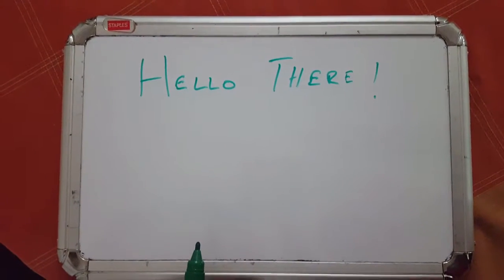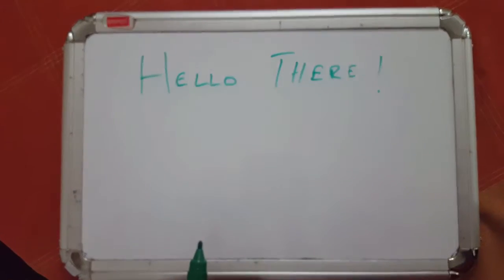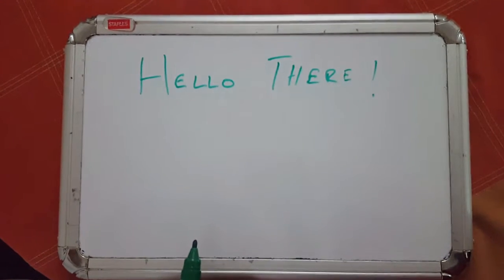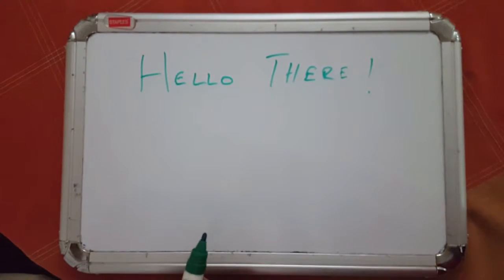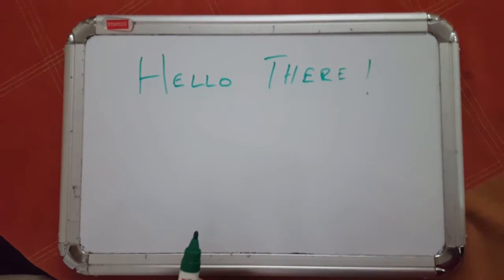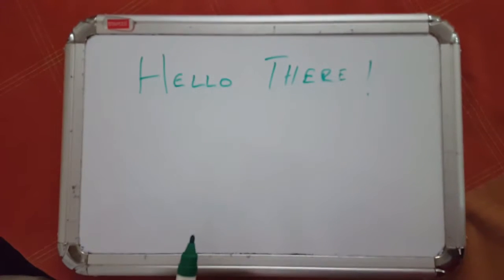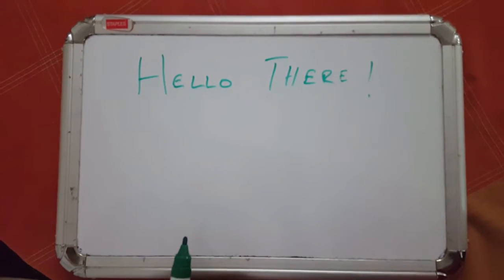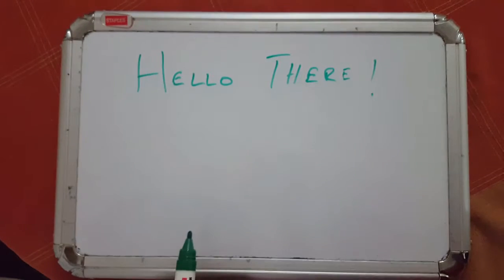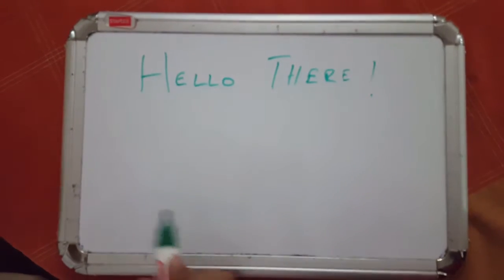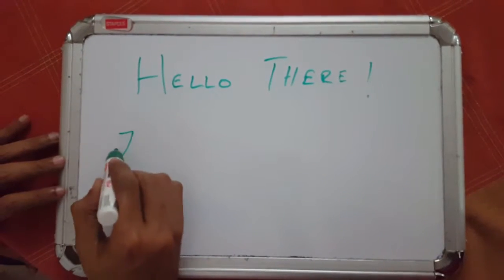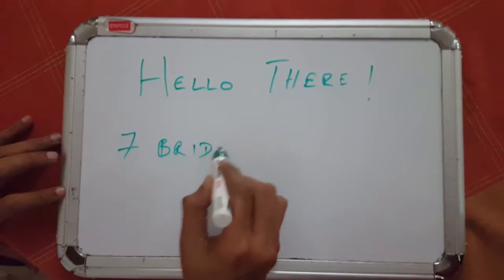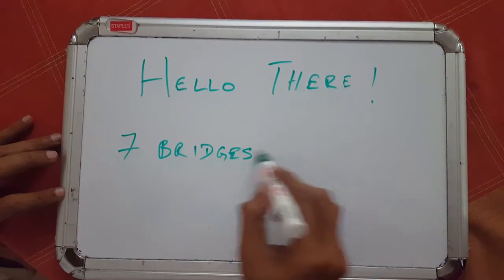My name is Swami and I'm going to talk to you on a topic in mathematics. I looked at the list of topics and I saw that Sal had covered pretty much all of the topics in Khan Academy already, so I decided to do something a little different. It's called the Seven Bridges of Konigsberg.